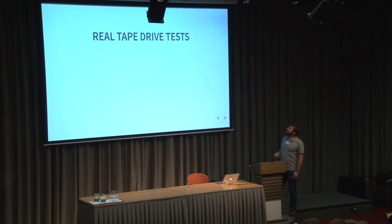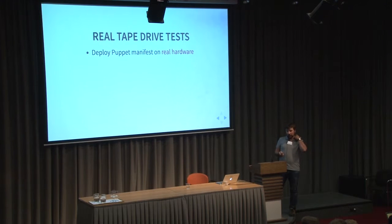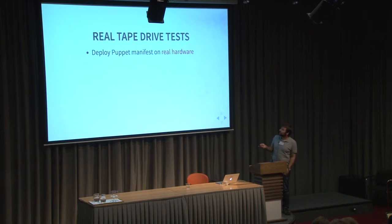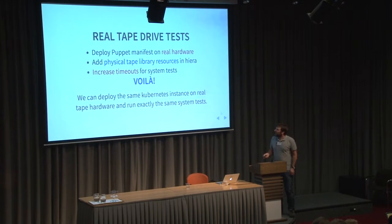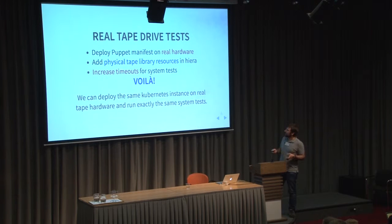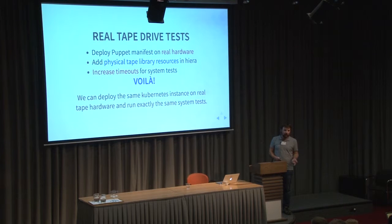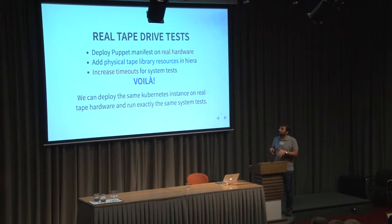Now the other question: how do you deal with real tape drive tests? Virtual tape drives are easy but real ones are a bit harder. I said I have a Ceph group for my Kubernetes cluster, so the idea is to expand this to manage real tape hardware. I add the physical drive resources because you need to know which drive is connected to which physical server. Then you increase the timeout a bit because it takes more time to mount a real tape than a virtual one — and you're done. With this approach you can deploy exactly the same Kubernetes instance, the same pod definitions and Docker containers, on real tape hardware, and run exactly the same system tests. So you can test logical block protection and access order changes on real tape drives — tests you cannot do on virtual tapes.